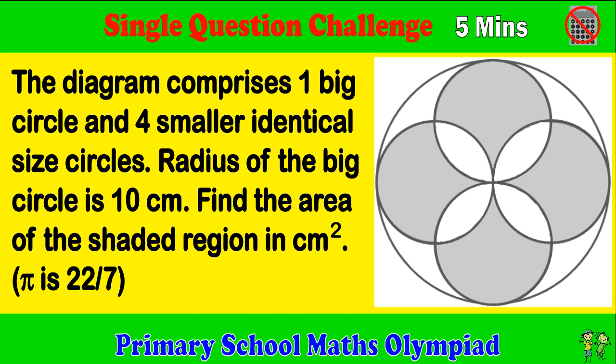The diagram comprises one big circle and four smaller identical size circles. The radius of the big circle is 10 cm. Find the area of the shaded region in cm². Pi is 22 over 7.